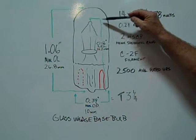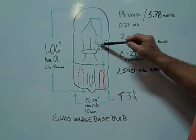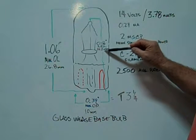The light center length is measured from the center to the base at 0.56 inches or 14.2 millimeters.